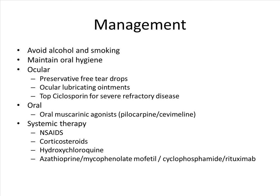The key to management of Sjogren's is to maintain good oral hygiene and to avoid precipitants such as alcohol and smoking. For patients with dry eyes, they can apply preservative-free teardrops or lubricating ointments, and those with more severe disease can apply topical cyclosporine. For patients with dry mouth, they can take oral muscarinic agonists such as pilocarpine or cevimeline. Patients with systemic involvement such as joint pain or arthritis can use NSAIDs, corticosteroids, or long-term hydroxychloroquine. For patients with more severe disease involving the central or peripheral nervous system, immunosuppressants such as azathioprine, mycophenolate, cyclophosphamide, or even rituximab can be used.